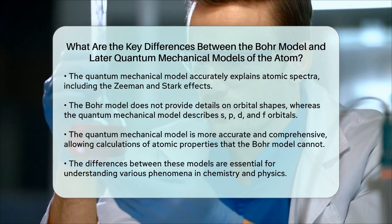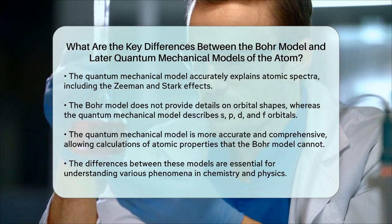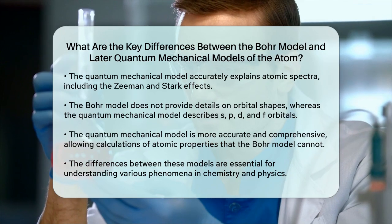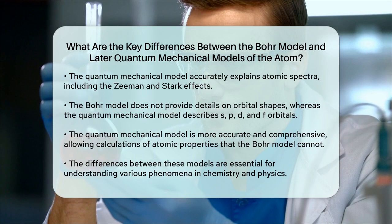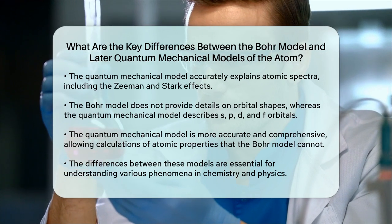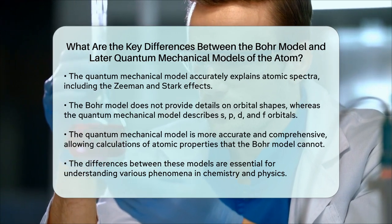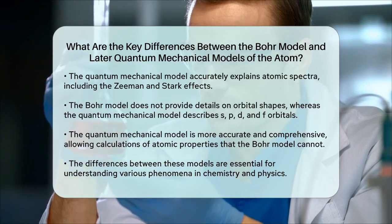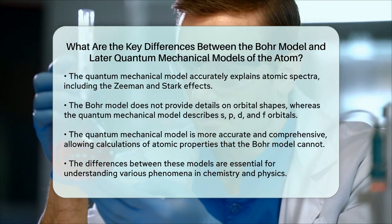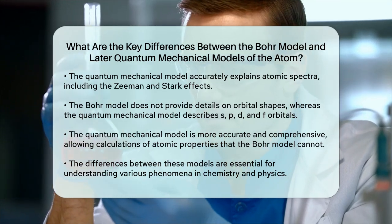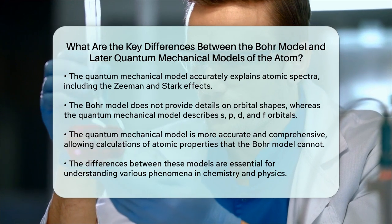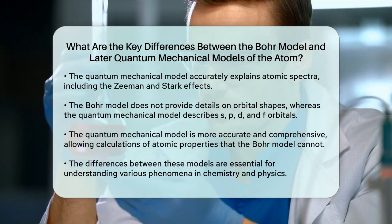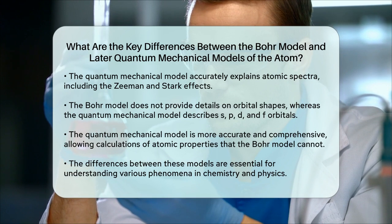Lastly, the quantum mechanical model is more comprehensive and accurate. It allows for the calculation of many atomic properties that the Bohr model cannot, such as the fine structure of spectral lines and the behavior of electrons in different environments. In summary, while the Bohr model was a significant step in understanding atomic structure, the quantum mechanical model offers a much more detailed and accurate description of how electrons behave in atoms.